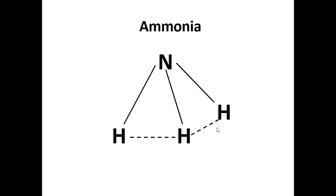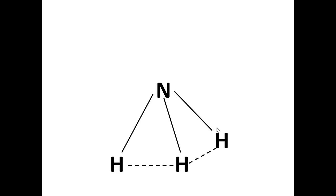Ammonia has the shape of a trigonal pyramid. Nitrogen is present at the apex of the pyramid, whereas the three hydrogens are present at the three corners of the triangular base. The C3 axis in ammonia passes through the nitrogen atom. A rotation of about 120 degrees about the C3 axis will produce an equivalent appearance, and during a complete rotation of 360 degrees, the equivalent appearance will be produced three times.